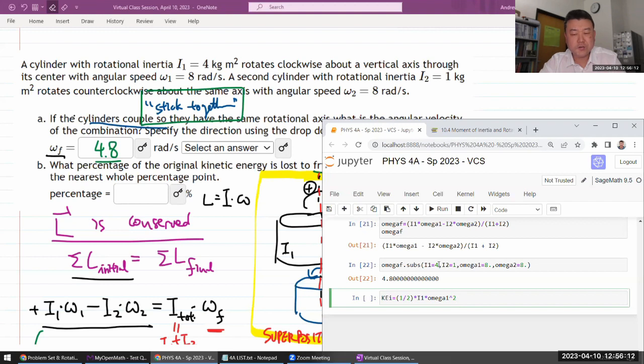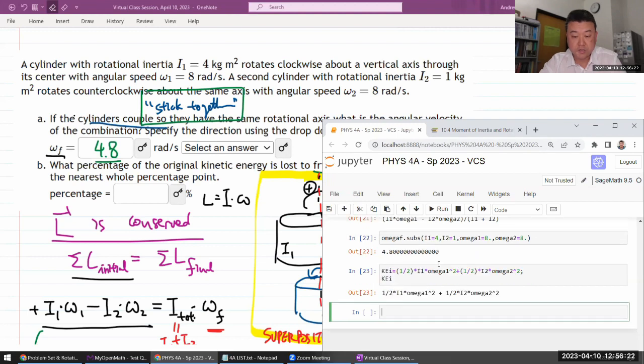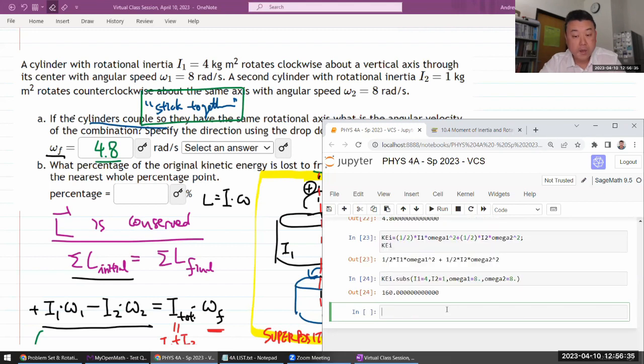So rotational kinetic energy of first piece and then the rotational kinetic energy of the second piece. That will give me my initial kinetic energy. And I can just plug in these quantities.